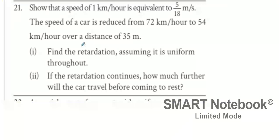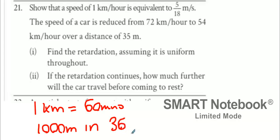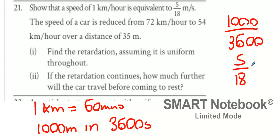5 over 18 meters per second. This means one kilometer in 60 minutes, which technically means a thousand meters in 60 multiplied by 60, 3600 seconds. So you just get a thousand and divide it by 3600, which in turn will turn out to be 5 over 18 meters per second.